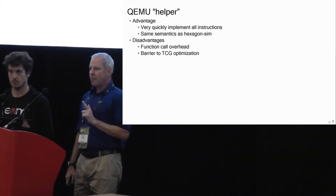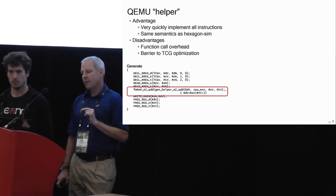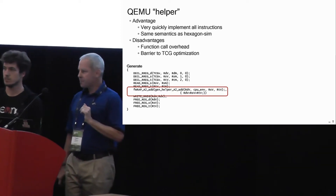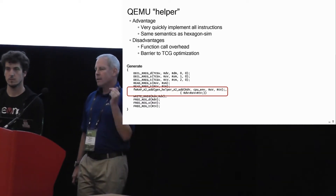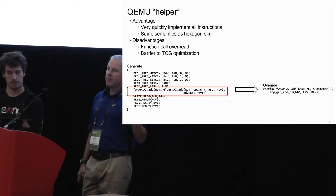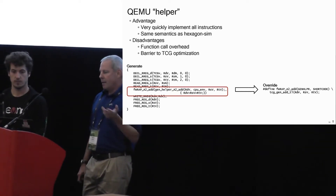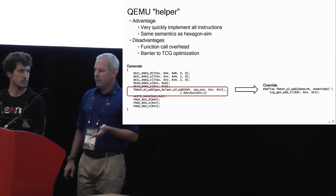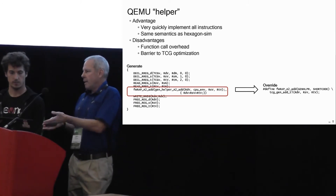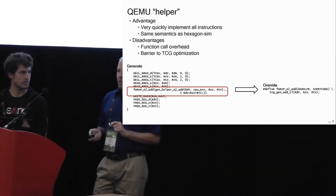How do we fix that? There's an FWRAP macro around the call to gen_helper. I can override that with an actual TCG implementation of the instruction. If you're familiar with TCG, you know an add is just TCG_gen_add_TL with the destination and two sources. So instead of calling a helper, I've generated the add directly in TCG — this is a good lead-in to what the Revenge team did.